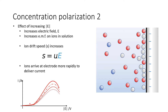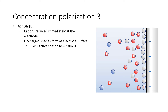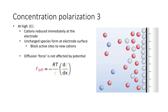Looking at our voltammogram, as we increase the potential we see a faster and faster rate of reaction, manifest as a greater increase in current. But we see it start to level off. As we increase the magnitude of the potential, more and more ions are attracted to the surface and are immediately reduced to the uncharged species. However, as we increase it still further, these uncharged species collect at the electrode surface and block active sites to new cations, inhibiting the ability for a cation to get to the surface. The diffusion force is simply a driving force against a concentration gradient.